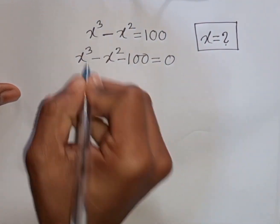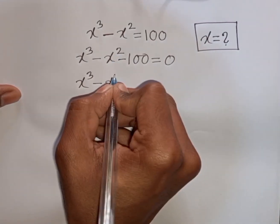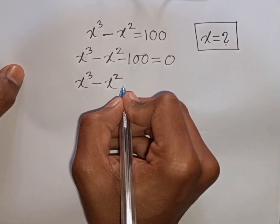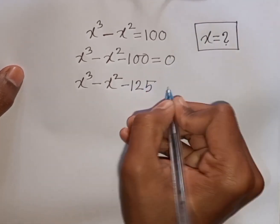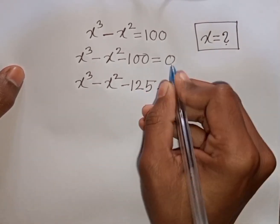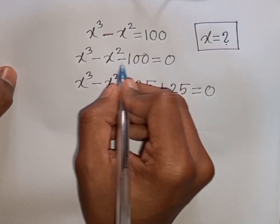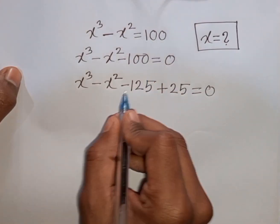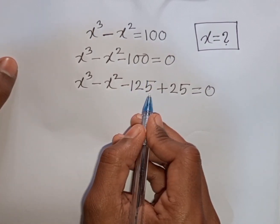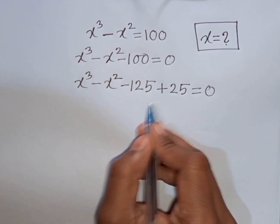Now we have x³ - x² - 100 = 0. The term minus 100 can be rewritten as minus 125 plus 25. To understand this: the nearest perfect cube to 100 is 125, so we write minus 100 as minus 125 plus 25.